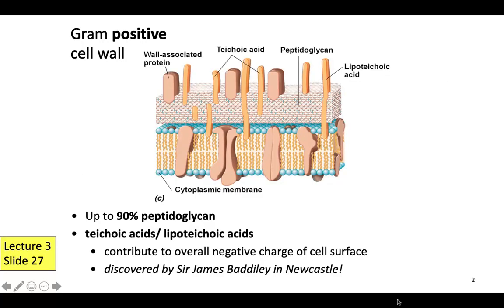Slide number 27 covers bacteria shape, size, and appendages. In this diagram you will see the cell wall of Gram-positive bacteria. There are a few components you need to remember: 90% of the cell wall is composed of peptidoglycan, and the rest is cell membrane. The proteins on the top left are surface proteins, and there are two types of acids in this cell wall.